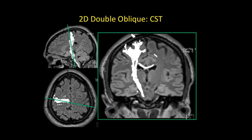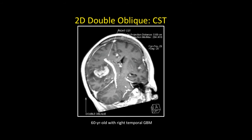Another post-processing step I do is to create double oblique snapshots of generated tracks to show them in the most complete profile with the lesion. In the MPR setting of your software, in this case Siemens Syngo and Leonardo-type software, you place the image slice along the long axis of the track in two different planes. Here is a double oblique coronal of the corticospinal tract and a tumor with measurements.